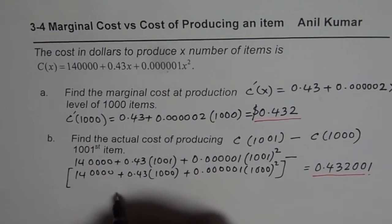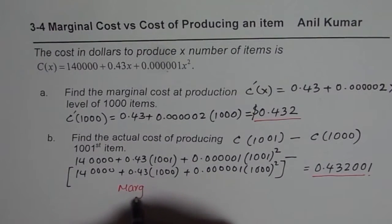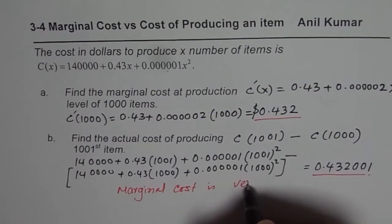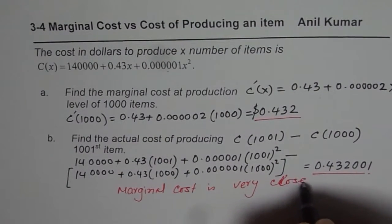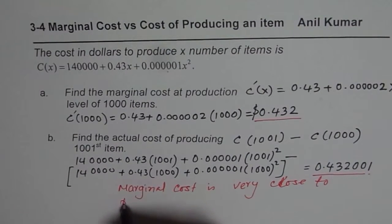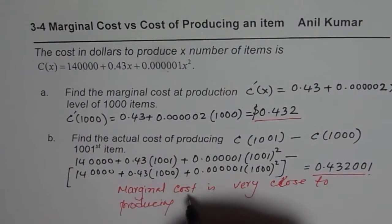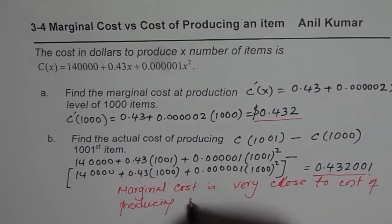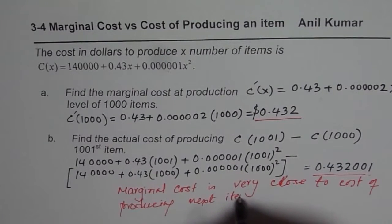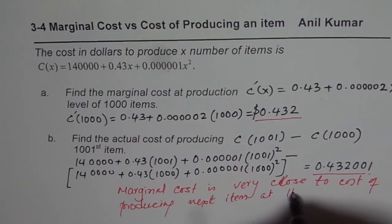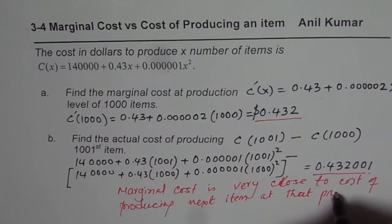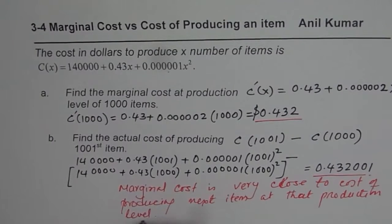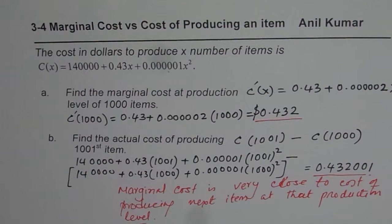So that is what it is. So basically, what you really find here is that the marginal cost is very close to cost of producing next item at that production level. So that is what marginal cost is. So that is how we can understand marginal cost.